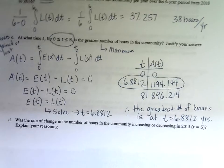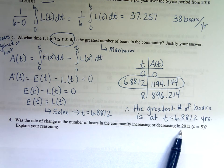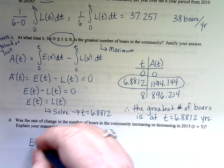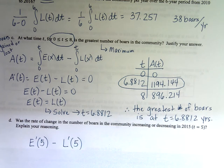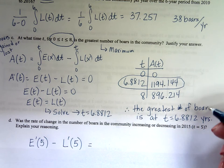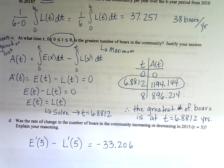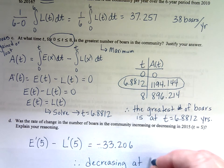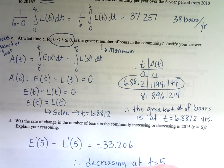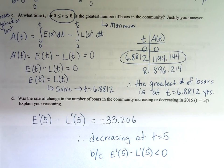Part D: Was the rate of change in the number of boars in the community increasing or decreasing in 2015? You need to know what E prime of 5 minus L prime of 5 would be. Go to your calculator, calculate those derivatives, plug in the 5, evaluate it at 5. That gives you negative 33.206. Because this is a negative number, was it increasing or decreasing? Therefore, decreasing at T equals 5 because E prime of 5 minus L prime of 5 is less than 0.